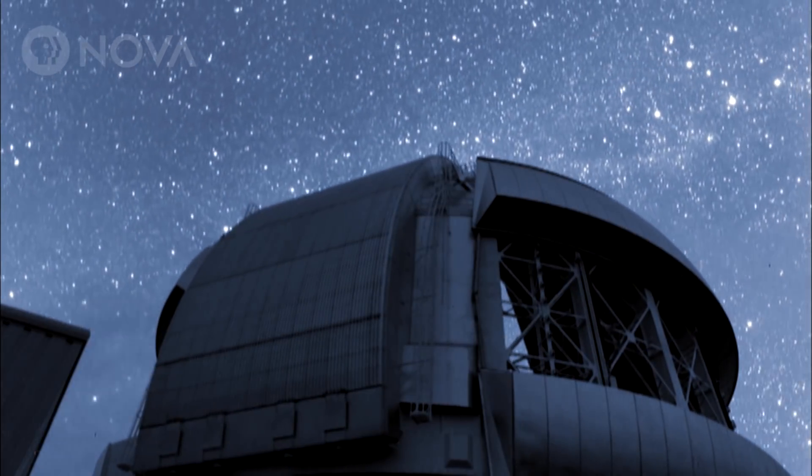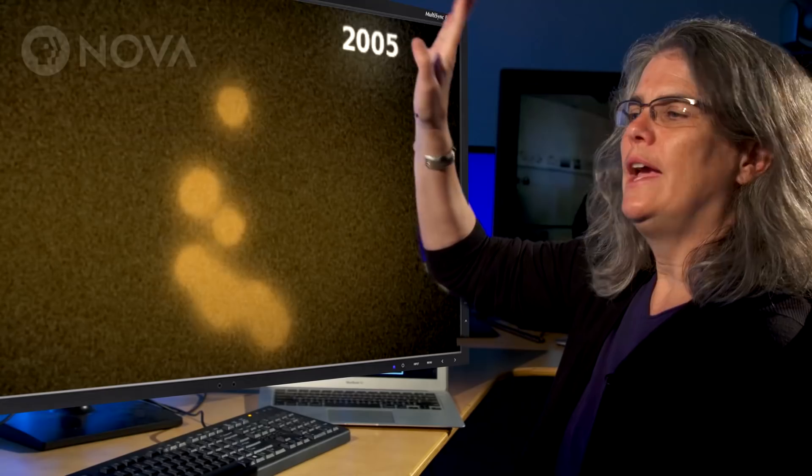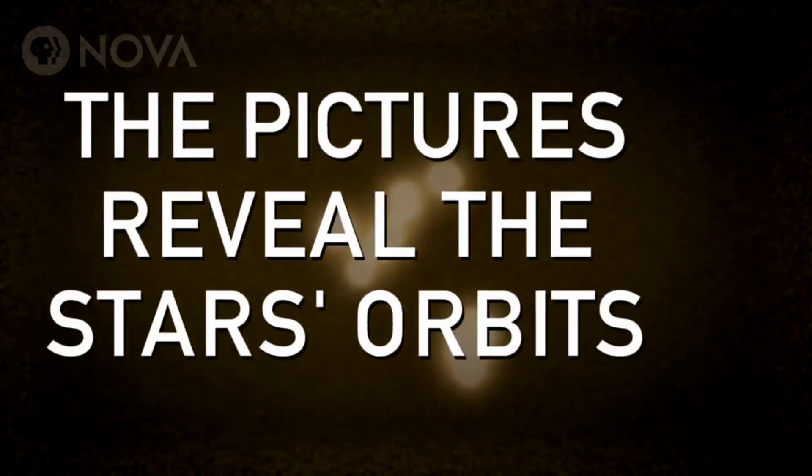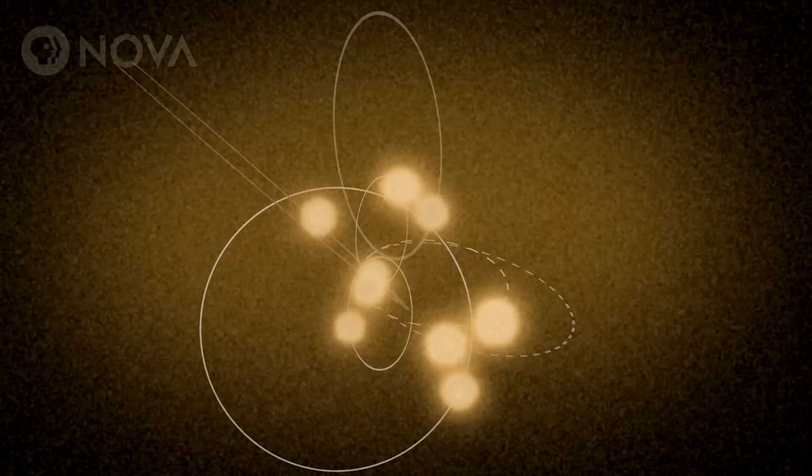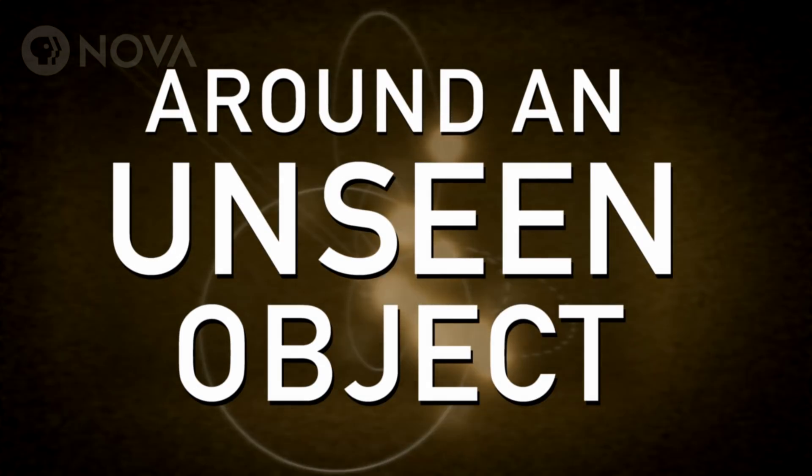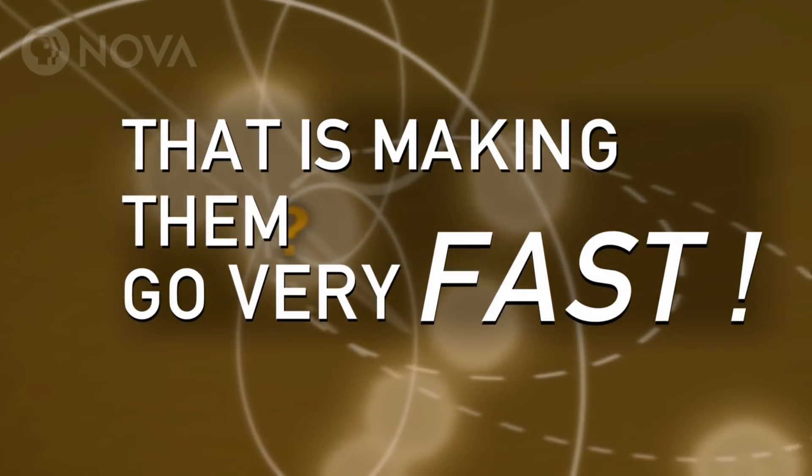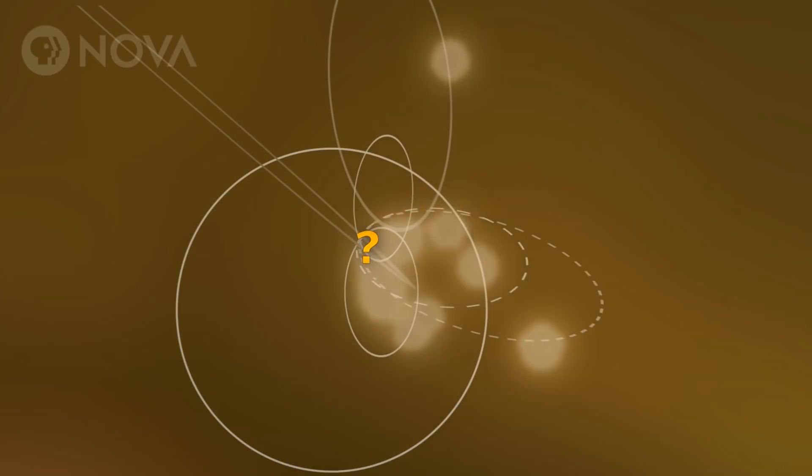So we started off in 1995, and every year since then we've taken an image. Just take a picture, and you watch how things move on the plane of the sky. Up to 10 million miles per hour. They're really hauling.